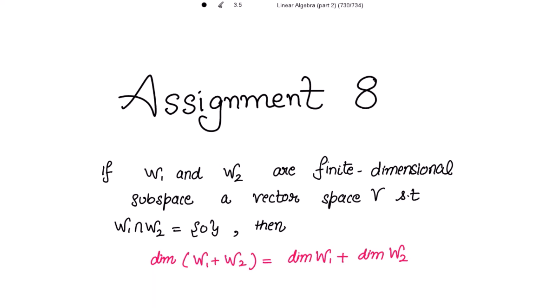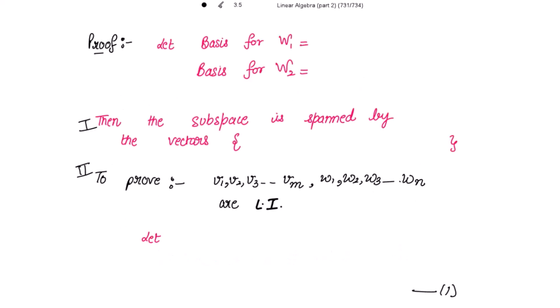This is assignment 8 and the theorem is: if W1 and W2 are finite dimensional subspaces of a vector space V such that their intersection is 0, then the dimension of their sum is equal to the dimension of W1 plus the dimension of W2. Let's start with the proof. We have to mention first the basis for W1.